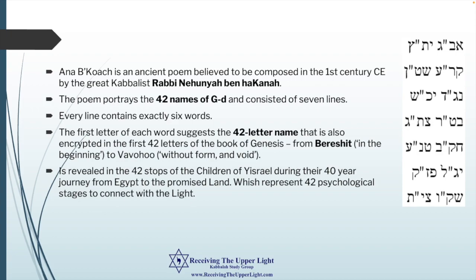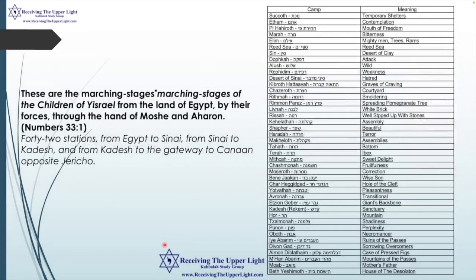The prayer portrays the 42 names of God and consists of seven lines, every line containing exactly six words. The first letter of each word reveals the 42-letter name, also encrypted in the first 42 letters of Genesis from Bereshit — 'in the beginning' — to Tohu va'Vohu — 'without form and void.' This name is also revealed in the 42 stops of the children of Israel during their 40-year journey from Egypt to the Promised Land, representing 42 psychological stages to connect with the light.